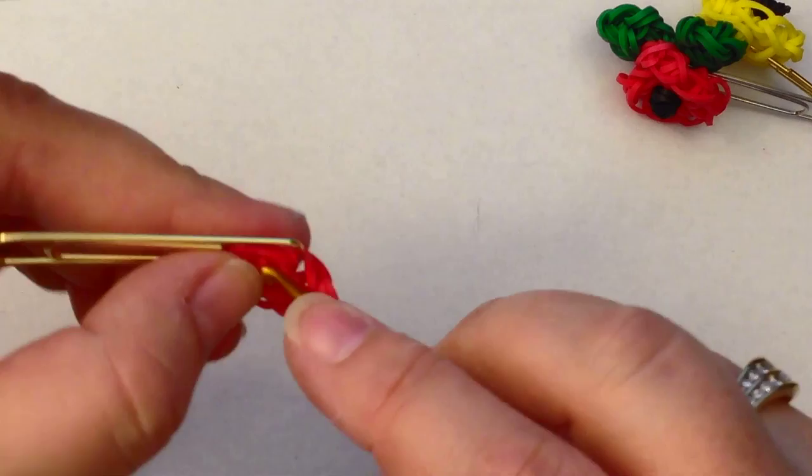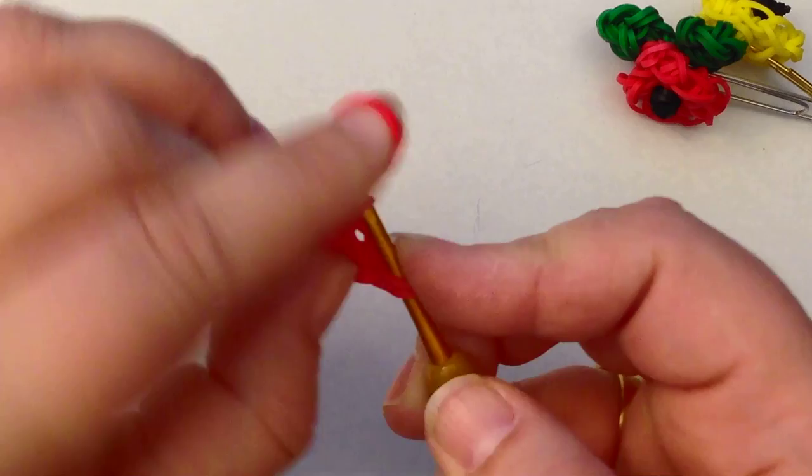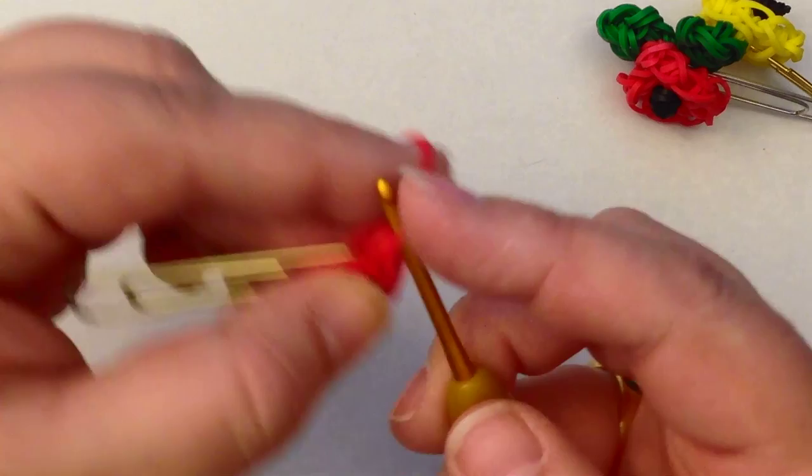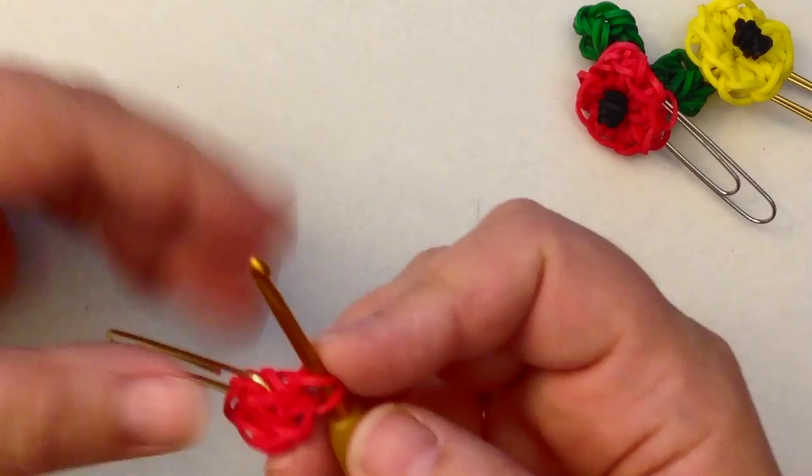Let's do it another time. Make sure you go through both the loops, pull it through, and link together. Now, at this stage, you can just do a little rosette around. You don't have to put it, you don't have to make it a flower, but I'm making it a flower.